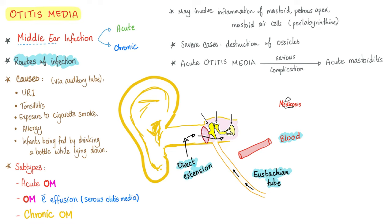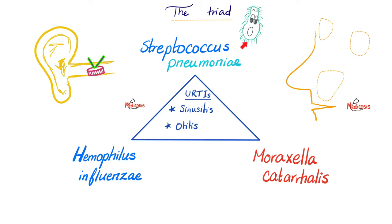Types of otitis media: acute otitis media, otitis media with effusion, and chronic otitis media. In acute otitis media, the effusion may be purulent — pus. In otitis media with effusion, the effusion is usually serous or mucinous — no pus. The bacterial triad that causes otitis or sinusitis is Streptococcus pneumoniae, Haemophilus influenzae, and Moraxella catarrhalis.